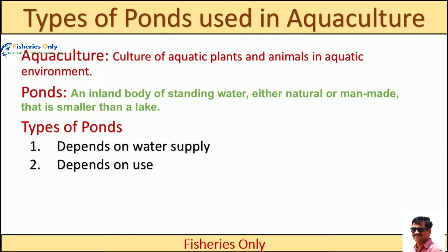Aquaculture is the culture of aquatic plants and animals in an aquatic environment. It is a tremendously growing food-producing sector in the world, with a growth rate of near about 10%. Mostly proteinous food is received from aquaculture with huge potential. For this purpose, we culture these animals in a water body in the form of ponds.